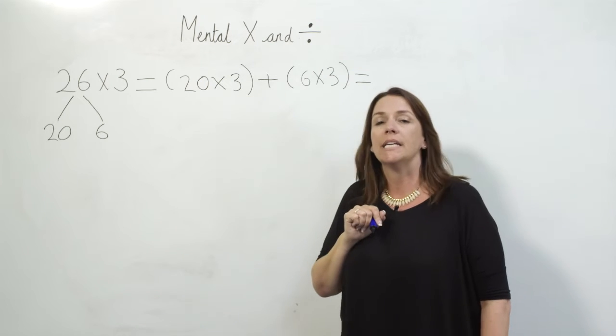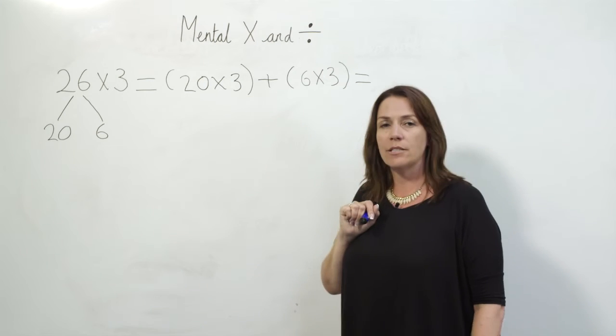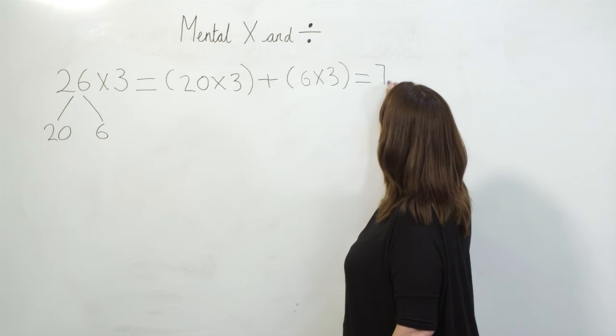Now, 20 times 3 is 60, and 6 times 3 is 18, which would give us 78.